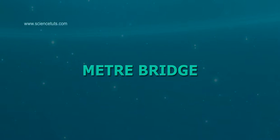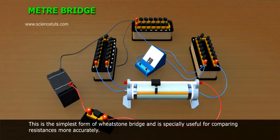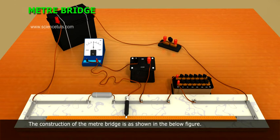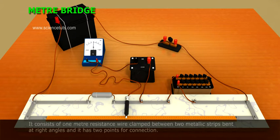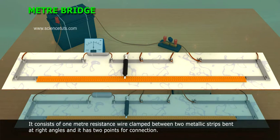Meter bridge. This is the simplest form of Wheatstone bridge and is specially useful for comparing resistances more accurately. The construction of the meter bridge is as shown in the below figure. It consists of one meter resistance wire clamped